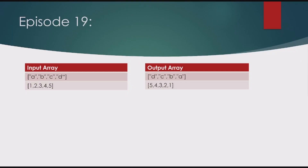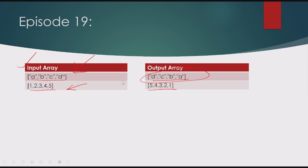We have a few input arrays. The first array has string elements a, b, c, d, and in the output we are expecting it to be reversed as d, c, b, a. Similarly, in the second example we have 1, 2, 3, 4, 5 and we are expecting the output to be 5, 4, 3, 2, 1. Let's see how to achieve this using an ADF pipeline.